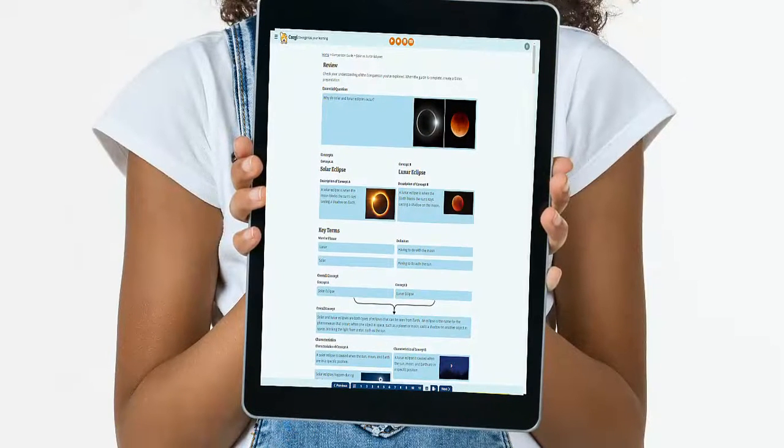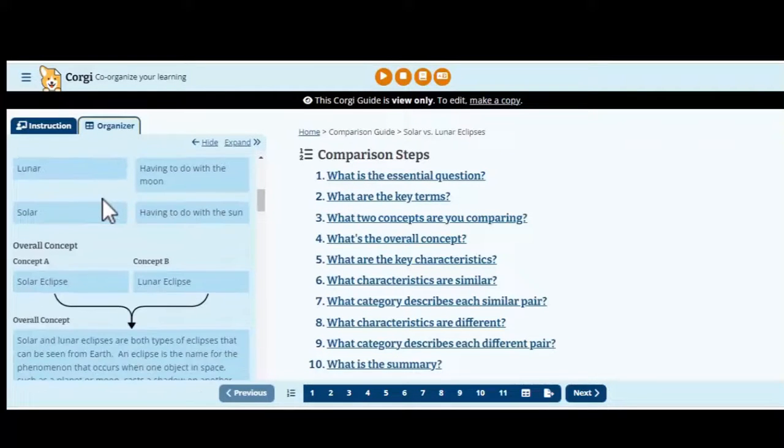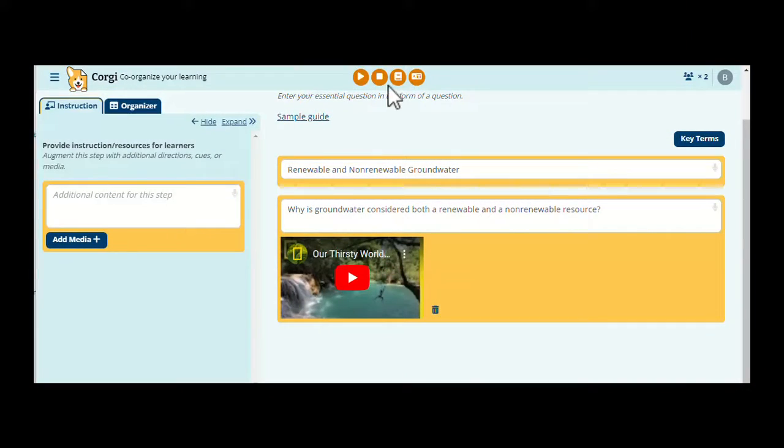Meet Corgi, a set of digital graphic organizers that helps you co-organize your learning. We took what's already great about graphic organizers and made them more flexible and accessible by bringing them online and adding lots of built-in tools and supports.